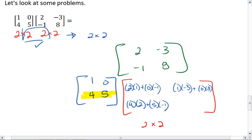And finally, we're going to take the bottom row and then the second column. We get 4 times negative 3, plus 5 times 8.